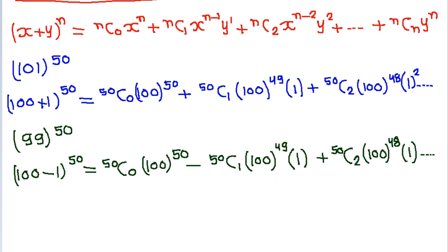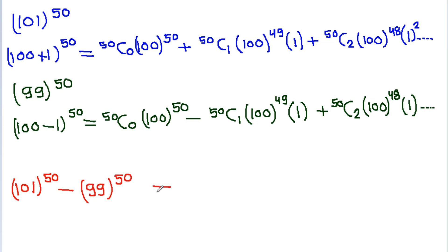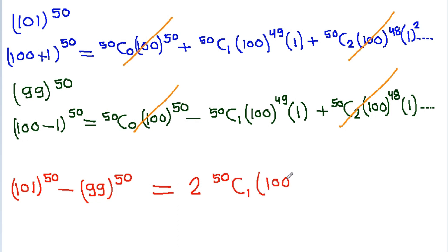If we subtract 99^50 from 101^50, the terms at even positions cancel and the terms at odd positions give 2 times their value. So we get 101^50 minus 99^50 equals 2 times 50C1 × 100^49 plus some remaining constant k.